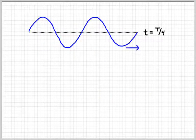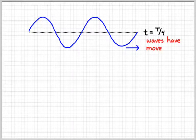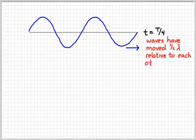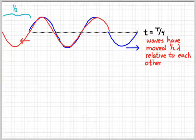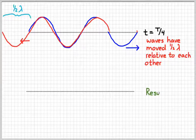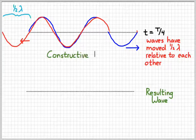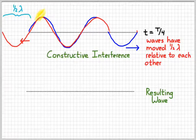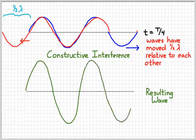A fourth of a period later, the two waves will have moved half a wavelength relative to each other. The blue wave stays roughly in place while the red wave has shifted half a wavelength to the left. Now those waves are lined up crest to crest — they're in phase — and we get constructive interference. The crest of the blue and the crest of the red are in the same spot, giving a bigger resulting wave. You add the amplitudes and get a bigger wave.